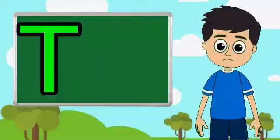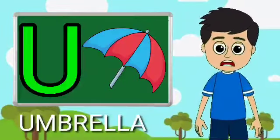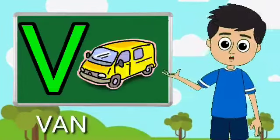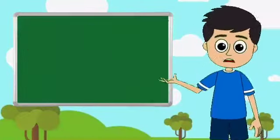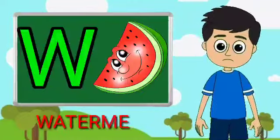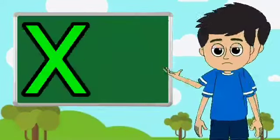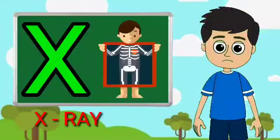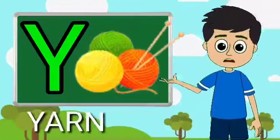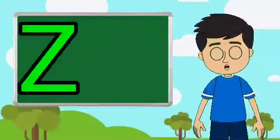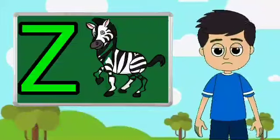U for umbrella, E for band, W for watermelon, X for extra, Y for yarn, J for jayvra. Thank you.